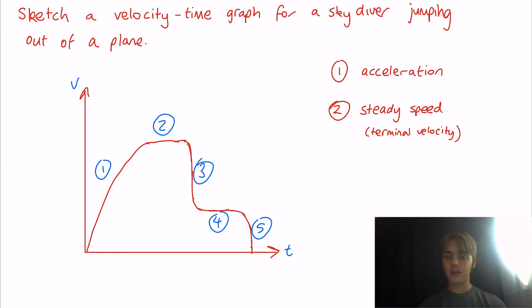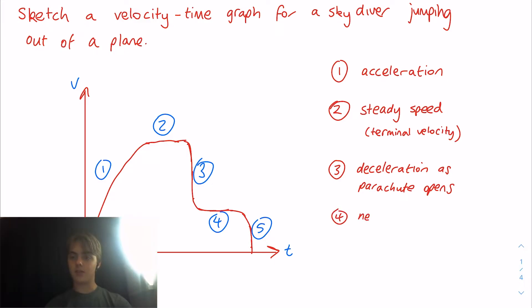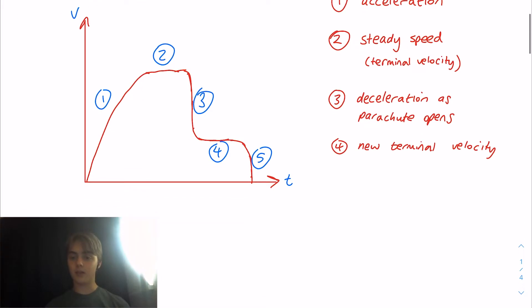The third phase is deceleration. When you open your parachute, you are going to massively increase the air resistance that you are experiencing. So the forces will be imbalanced and you will slow down, decelerate when the parachute opens. The fourth phase is when you reach a new terminal velocity. Because as you slow down, the air resistance will get lower and lower. And then you will reach a new terminal velocity when the weight is equal to the air resistance again. And finally, when you hit the ground, you will obviously be stationary.